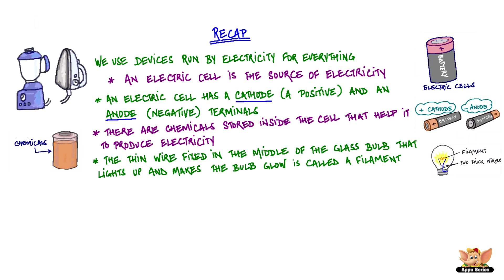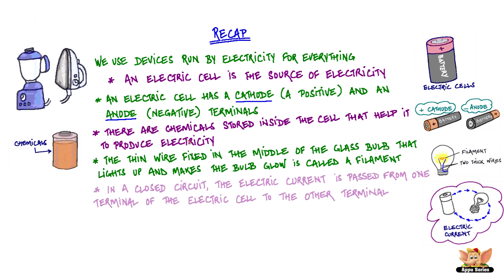The thin wire fixed in the middle of the glass bulb that lights up and makes the bulb glow is called a filament. In a closed circuit, the electric current is passed from one terminal of the electric cell to the other terminal.